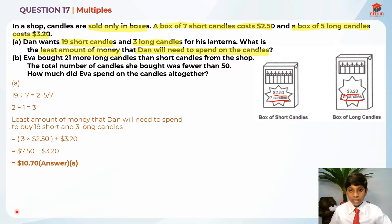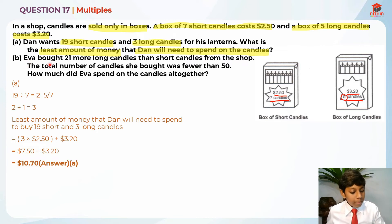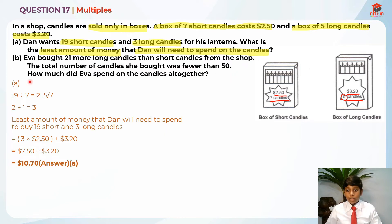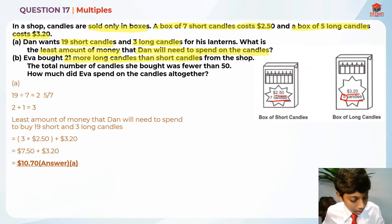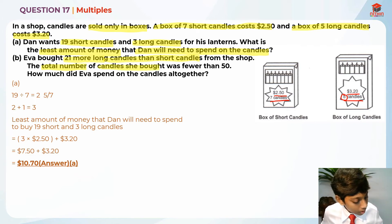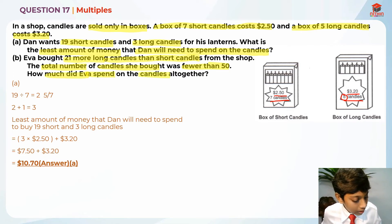Now let's move on to Part B. Eva bought 21 more long candles than short candles from the shop. The total number of candles she bought was fewer than 50. Dan and Eva are different persons. Eva bought 21 more long candles than short candles — this is a comparison — and the total number of candles is fewer than 50. The question asks: how much did Eva spend on the candles altogether?